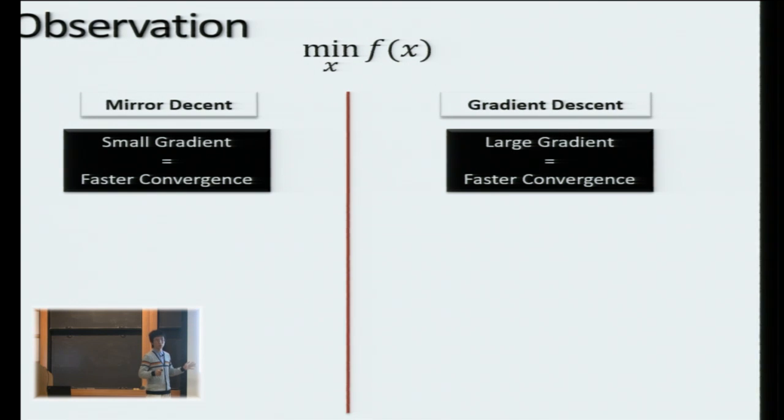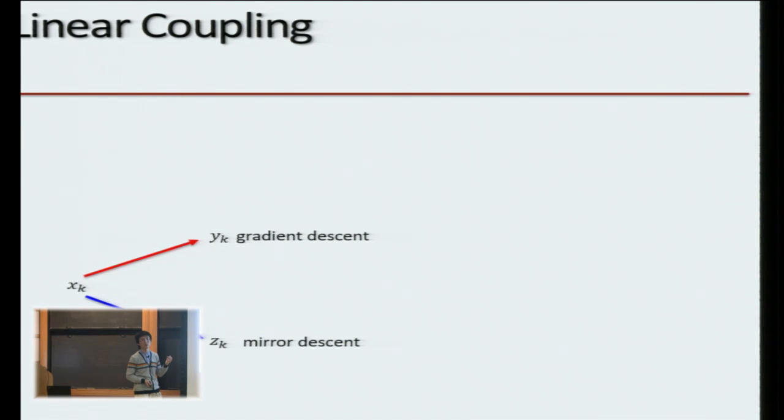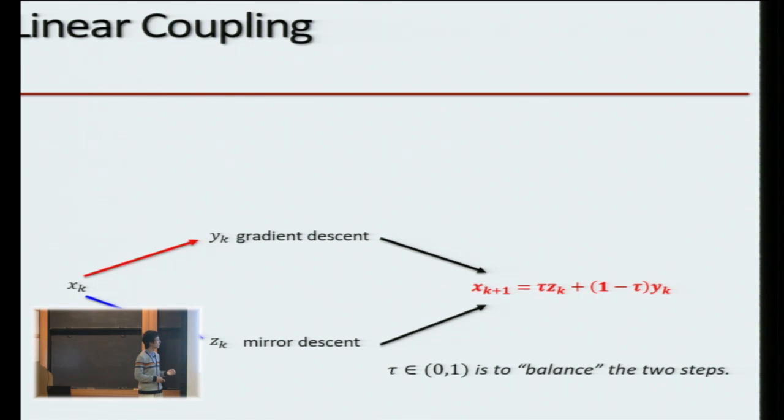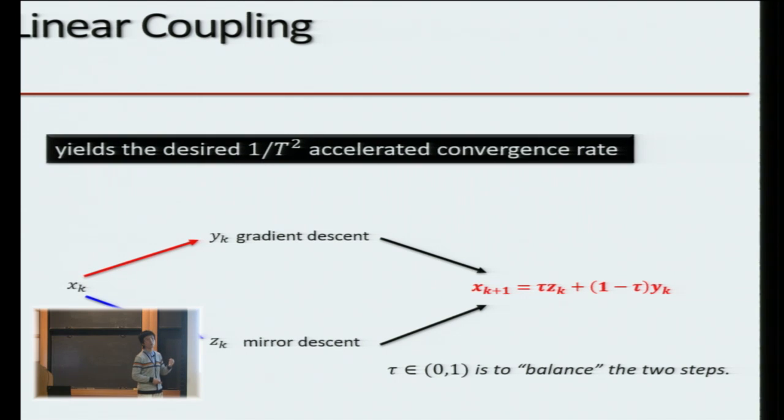So then there's a natural question that is, how do we combine the analysis of the two for faster convergence? The answer is yes. And this is what we call the linear coupling framework. So at any point, we could make, say, two descent steps, a gradient descent, a mirror descent step, and then linearly combine the two using a combining ratio that's between zero and one to be tuned very carefully. And if you do it this way, you can recover the T-square accelerated convergence rate.